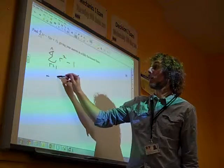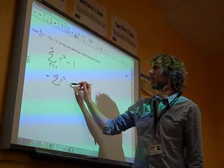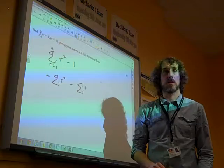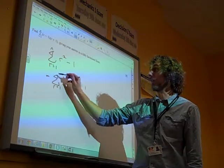Now we need to split this up. So this would be the sum of the r squareds, take away the sum of some ones, as r goes from 1 to n.